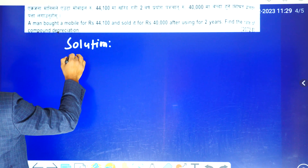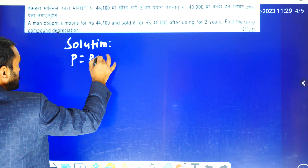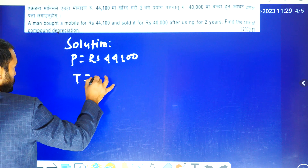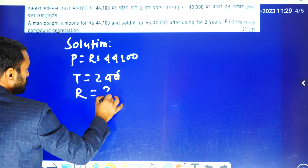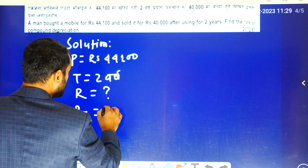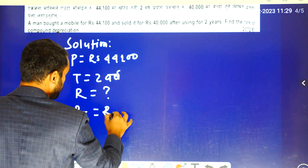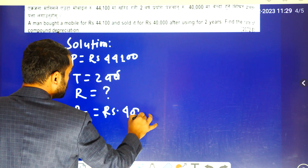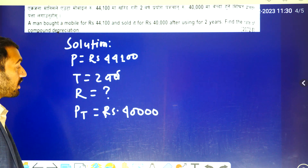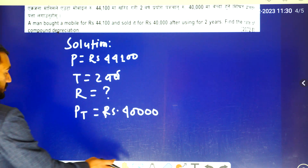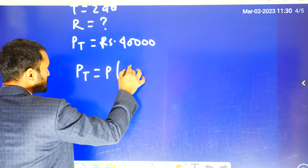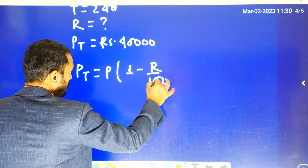So the formula will be like that. Time will be 2 years. Rate will be what we need to find. We need to get 40,000. So this is 40,000. Now we have to find our rate using the formula Pt equals P times 1 minus R by 100 to the power t.